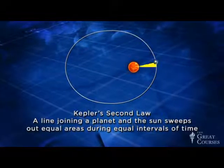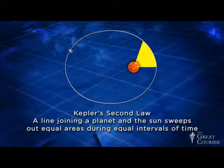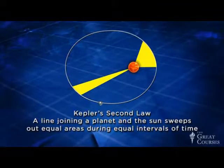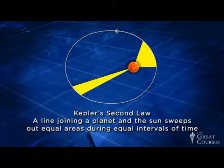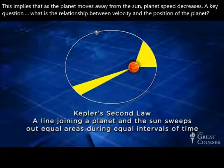A line joining a planet and the Sun sweeps out equal areas during equal intervals of time. This implies that as the planet moves away from the Sun, the speed of the planet decreases. A key question is, what is the relationship between planet velocity and the position of the planet?